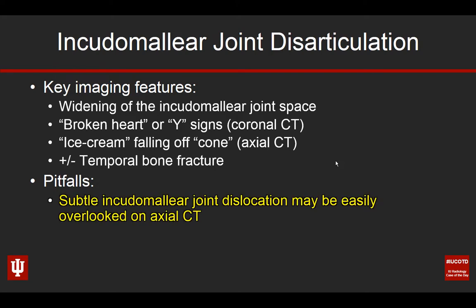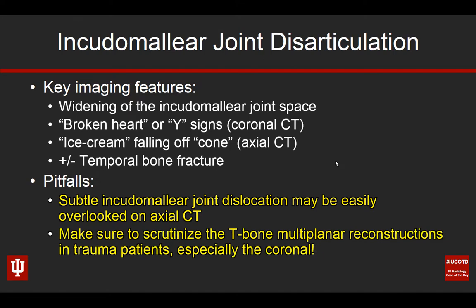A couple of pitfalls here. Incudomallear joint space dislocation can easily be overlooked on CT, particularly if you're only looking carefully at the axial plane. This is a finding — and Rick Wiggins has pointed this out — that you can see better on the coronal reconstructed images. That broken heart sign really jumps out much more than the subtle displacement you may see on axial images. My challenge to you is to always scrutinize the temporal bone multiplanar reconstructions in trauma patients, especially the coronals, when looking for ossicular chain disruption. These are tiny structures, and the distraction of these joint spaces may be very minimal, so use all the tools in your toolbox — particularly those coronal multiplanar reconstructed images.